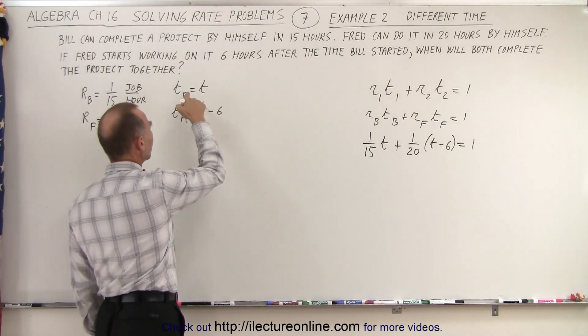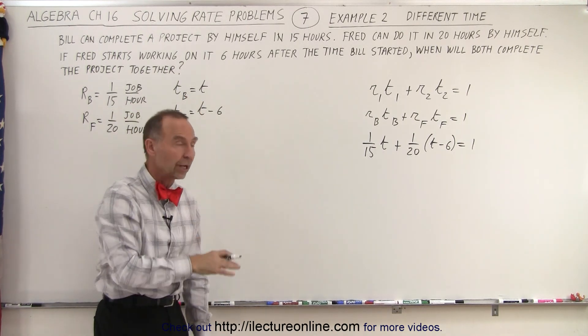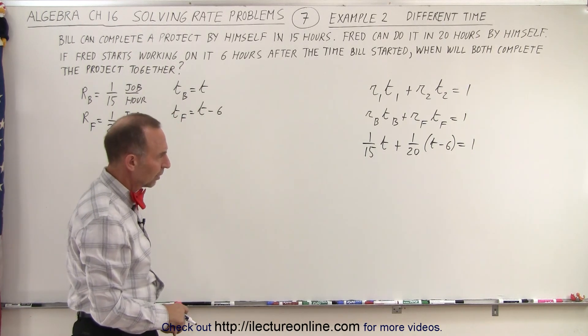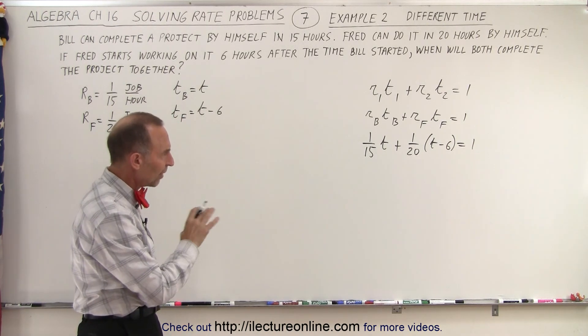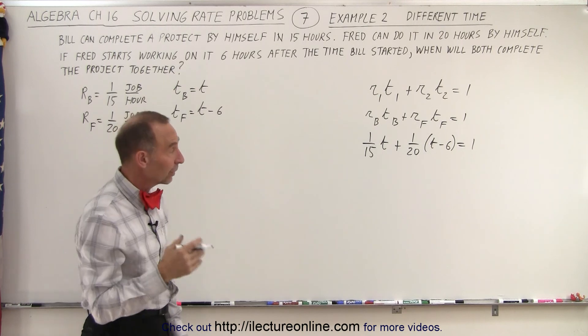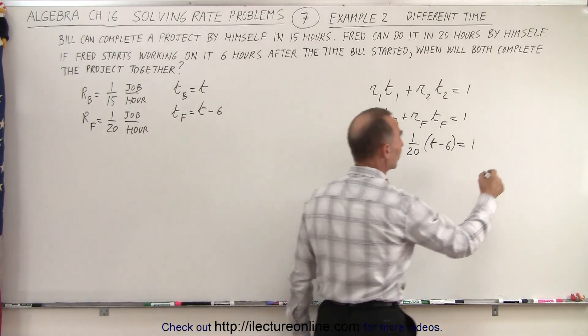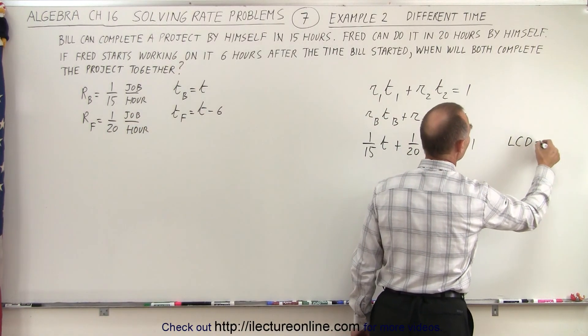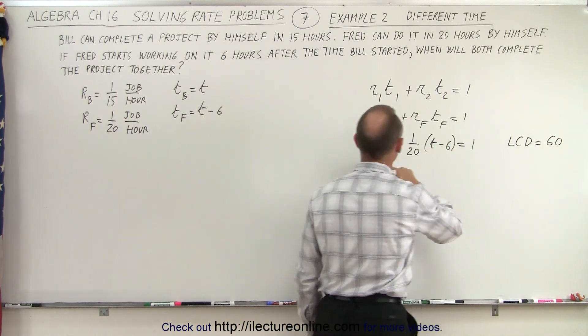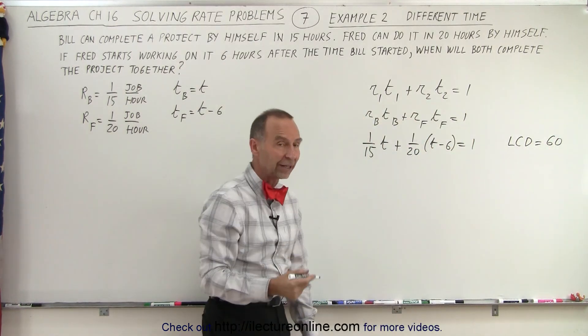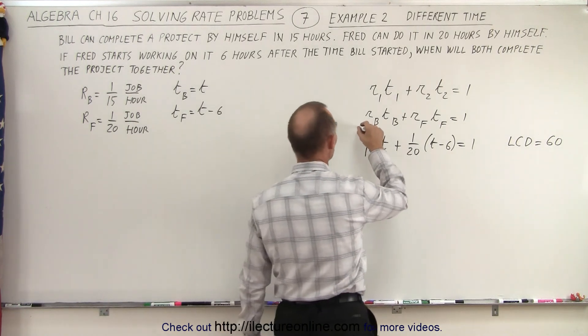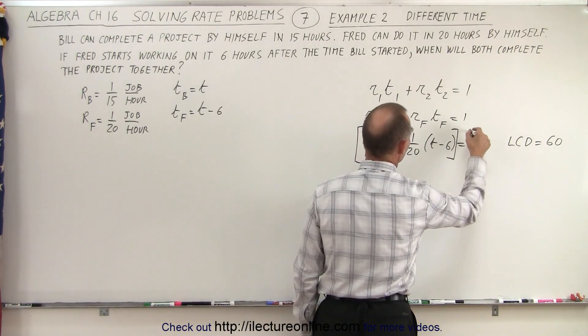Now remember, time is the time that Bill spends on it who started working first. So first we need to get rid of these fractions and so we have to multiply that by the lowest common denominator which in this case is 60. The LCD is equal to 60 because both 15 and 20 can evenly divide into 60. So we're going to multiply both sides of the equation by 60.